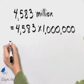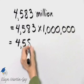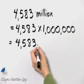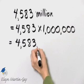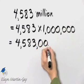Or you can simply say to yourself, it's 4,583 million, so make it so by attaching the correct number of zeros, which will be six zeros.